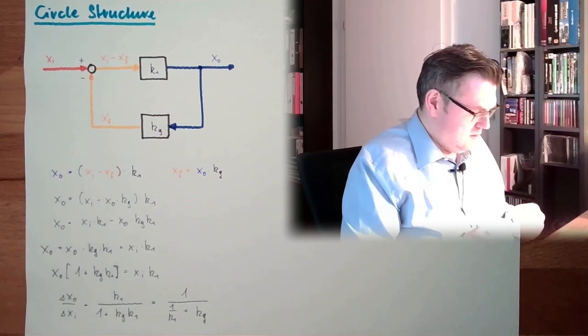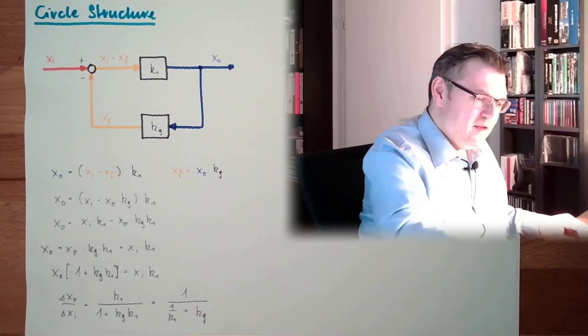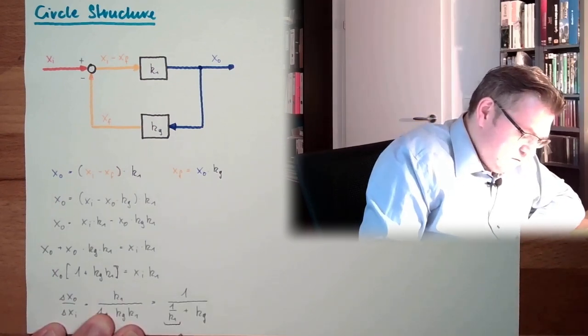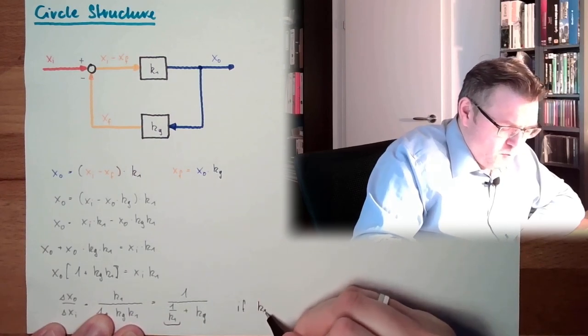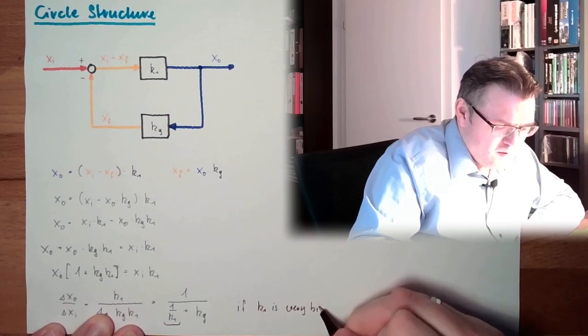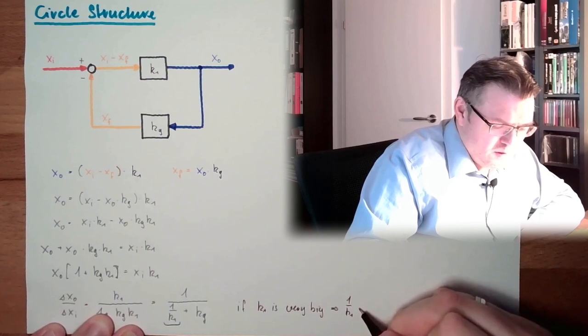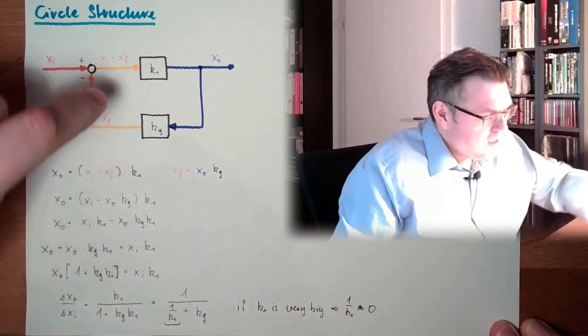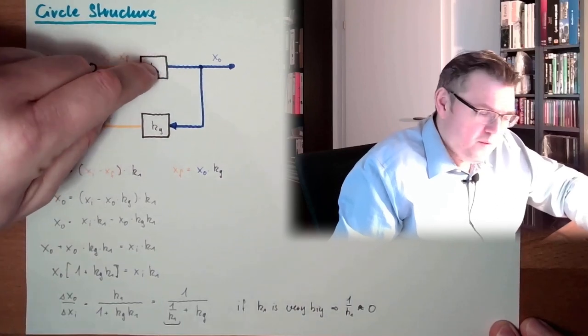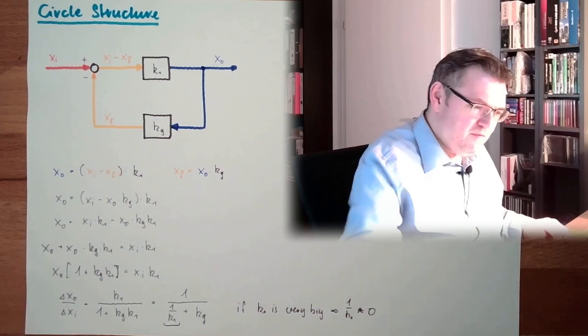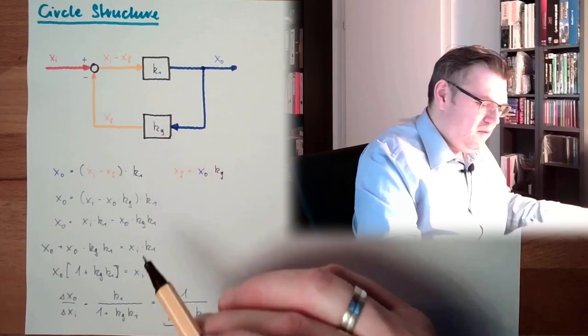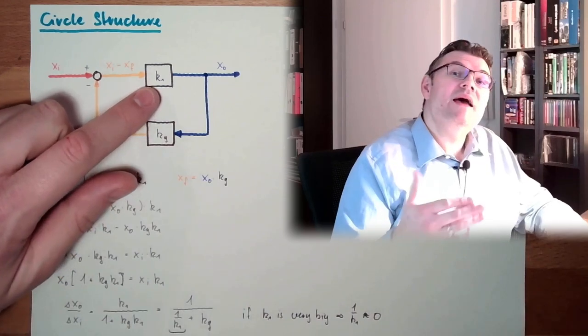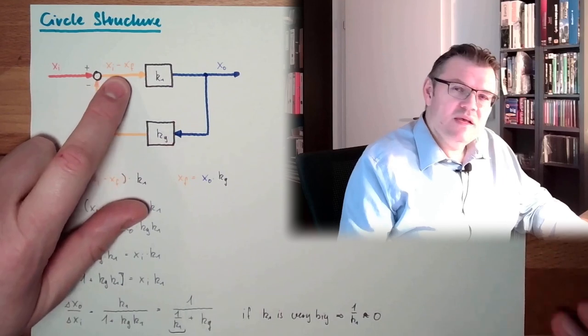So what do we see here? This is the sensitivity. And the sensitivity, look at that. If K1 is very big, 1 divided by K1 is almost zero, around zero. So it's just 1 divided by KG. So if this is as high as possible, the transfer function or the sensitivity is only depending on this feedback here. So we have to tend that this gain factor here is as high as possible. This means this difference here is very low.